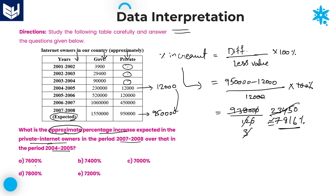In the options, if you observe carefully, the values are 7,800; 7,600; 7,400; and 7,000 — all round figure values. According to the options, our nearest answer is 7,800 percentage. Option D is the right answer: 7,800 percentage.